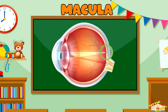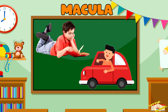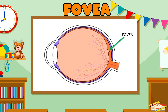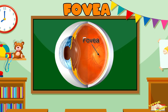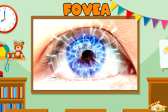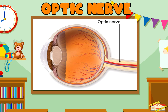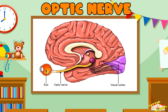The macula provides sharp, detailed central vision, important for activities like reading and driving. Fovea: The fovea is a tiny pit in the macula that contains a high concentration of cones. It is responsible for the sharpest vision.